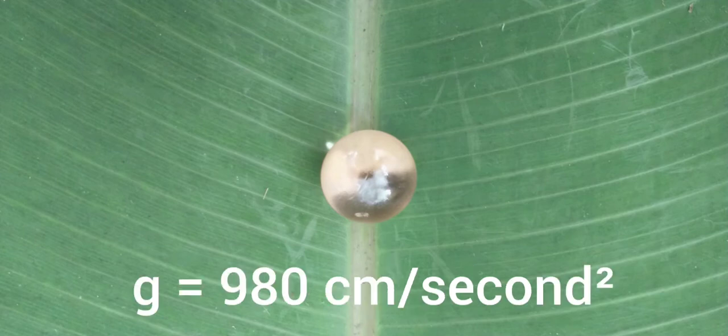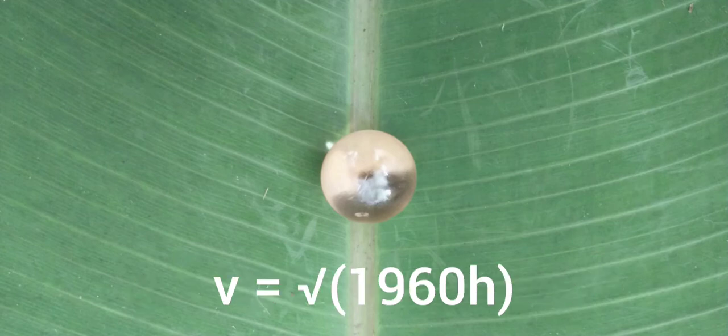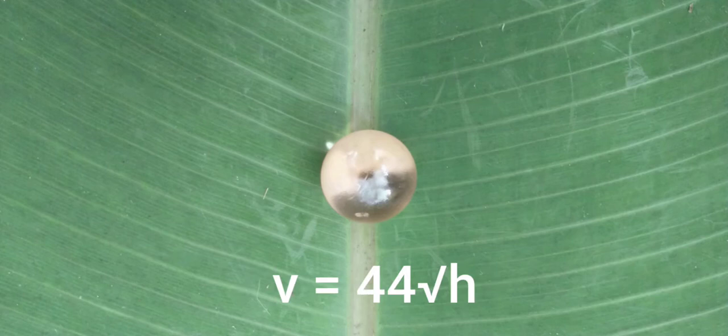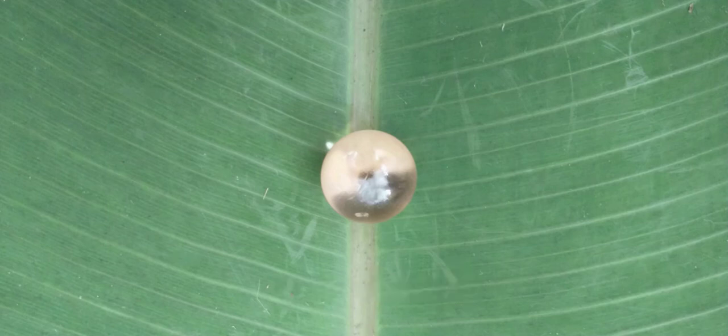However, g is known to be 980 centimeters per second squared. Therefore, v is equal to the square root of 1960h. Take the square root of 1960, about 44, and you get v should be proportional to 44 square root of h. Notice the mass has gone away. The mass doesn't affect the speed of the marble at the bottom.